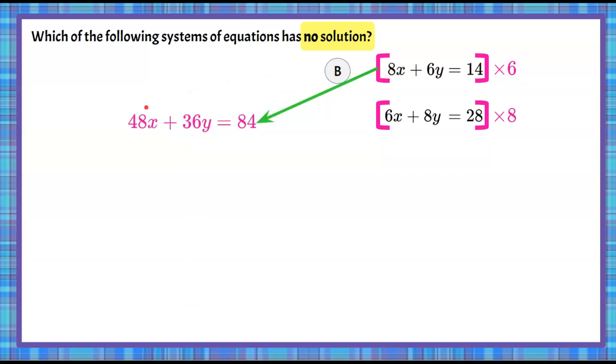So 6 times 8 is 48, 6 times 6 is 36, and 14 times 6 is 84. And then we're going to take the second equation and multiply everything by 8. 8 times 6x is 48x, 8 times 8y is 64y, and 8 times 28 is 224.